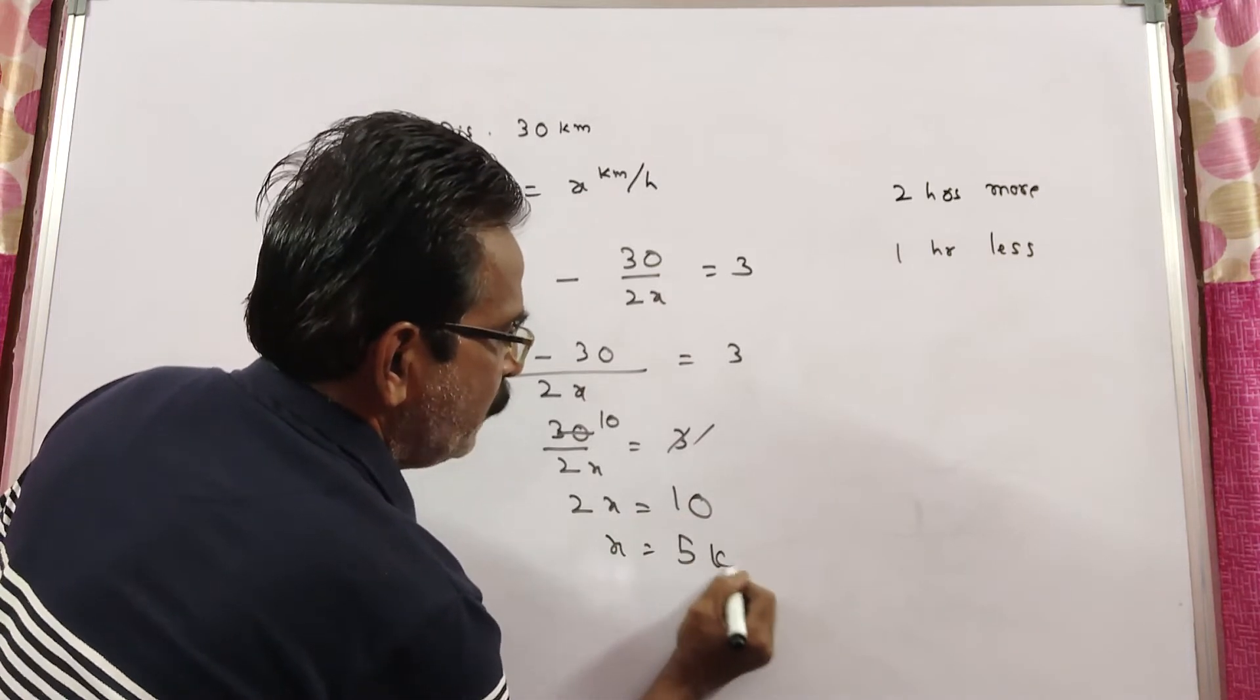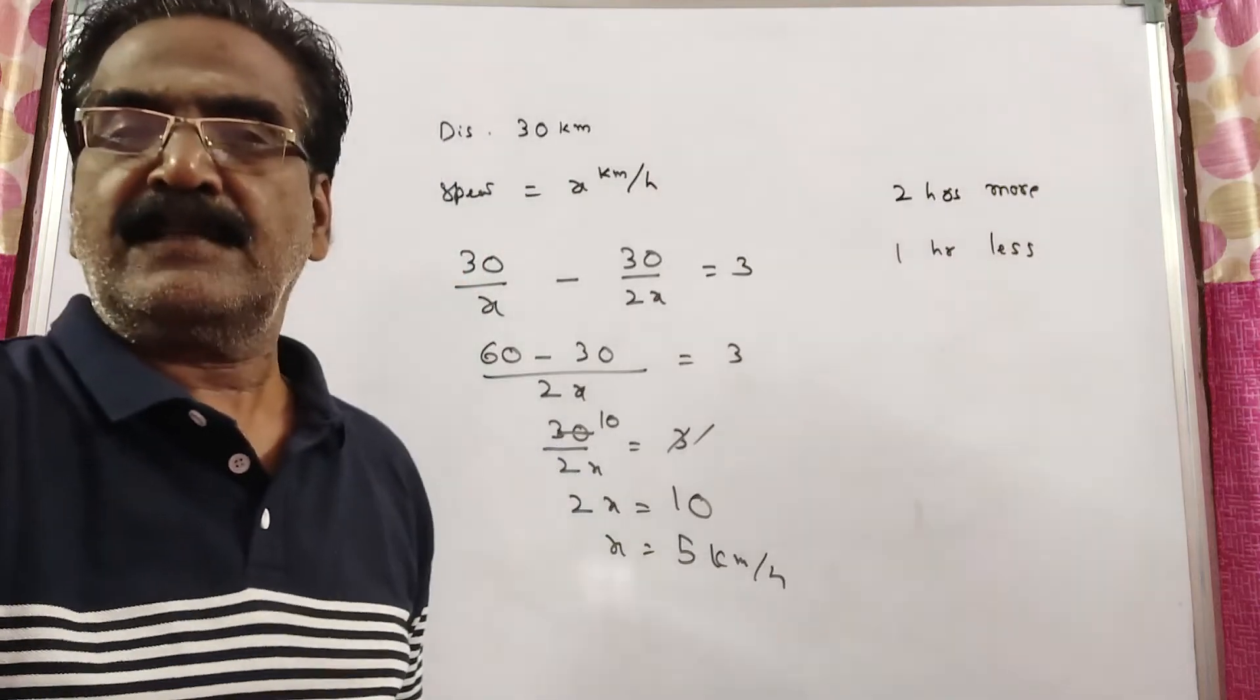x is equal to 5 kilometers per hour is your answer, friends. Thank you.